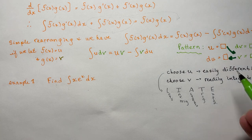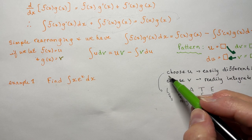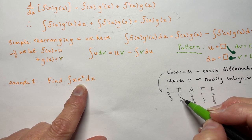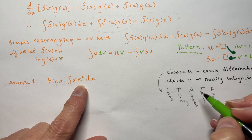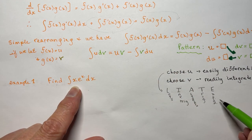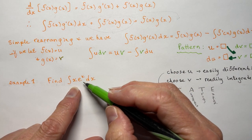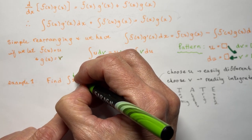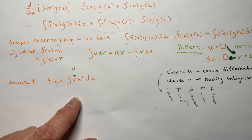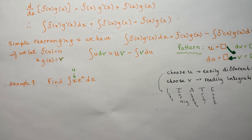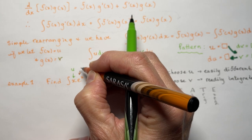Well, according to my rule, I choose u to be a logarithm first — I don't have a log function, I don't have an inverse trig. I have algebra, which would be this x. The exponential would be my e^x. So I'm going to use x to be my u, and I'm going to use e^x to be my dv.